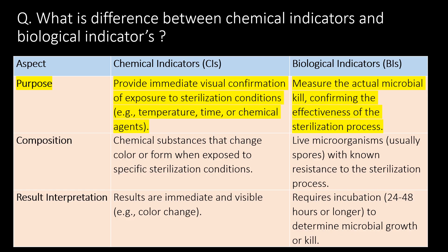A very basic and commonly asked question: what is the difference between chemical indicators and biological indicators? Chemical indicators provide immediate visual confirmation of exposure to sterilization conditions, such as temperature, time, or chemical agents, whereas biological indicators measure the actual microbial kill, confirming the effectiveness of the sterilization process.